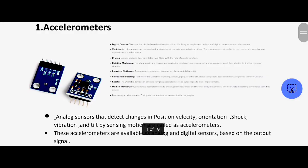The first sensor is the accelerometer. The accelerometer is the same as a digital sensor. Here we are going to show you the position sensor and orientation sensor, along with its applications.